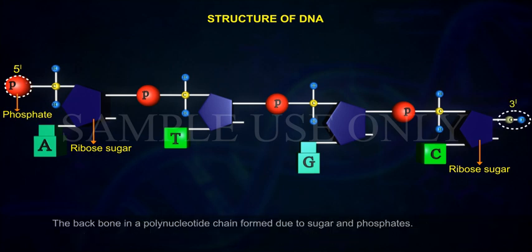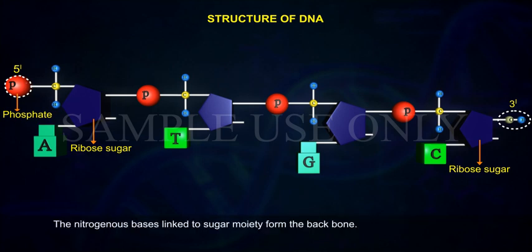The backbone in a polynucleotide chain is formed due to sugar and phosphates. The nitrogenous bases linked to sugar moiety form the backbone.